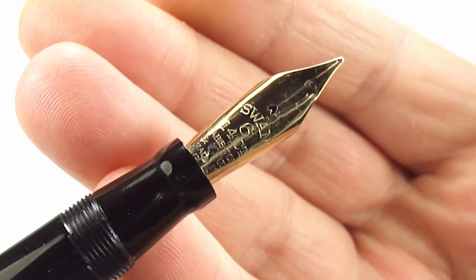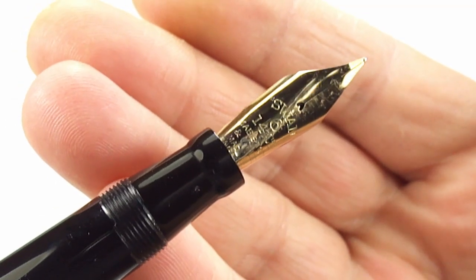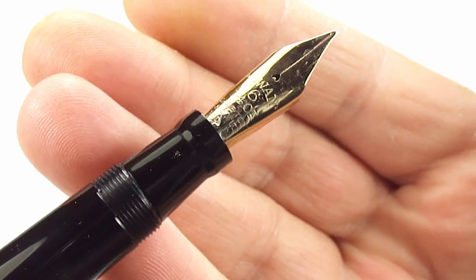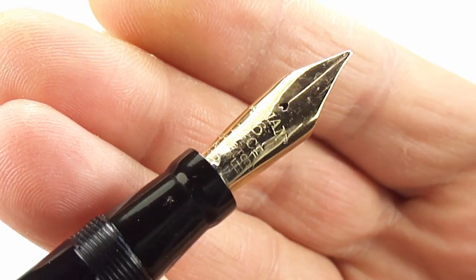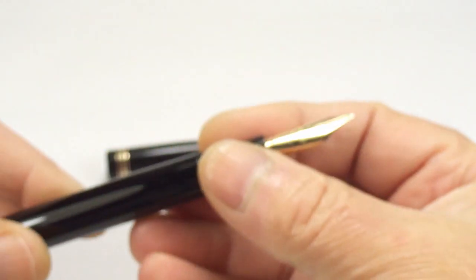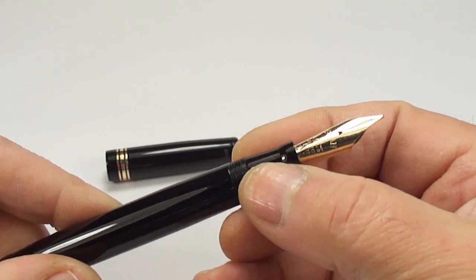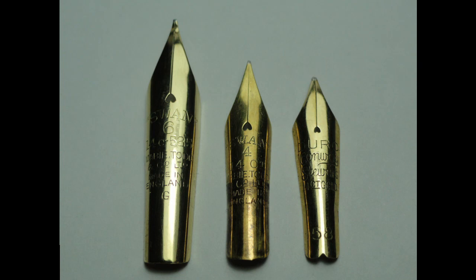The Number 6 nib, as far as I'm aware, is not the largest nib within the Swan range. I believe there was a Number 8 nib which I've not come across. Let me show you this picture here. To the left, that's the Number 6 nib. To the center we've got a Swan Number 4, and to the right for comparison, a Conway Stewart Dioro nib. The Dioro nibs were one of the largest nibs within their range, so as a comparison you can see how big the Number 6 nib is.